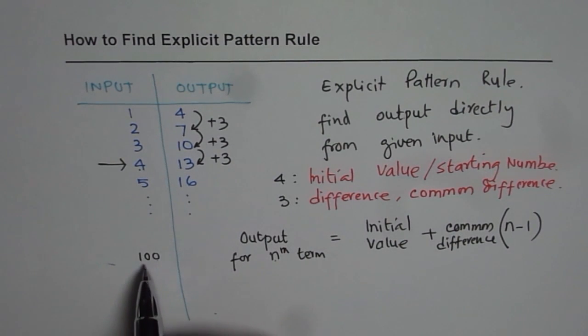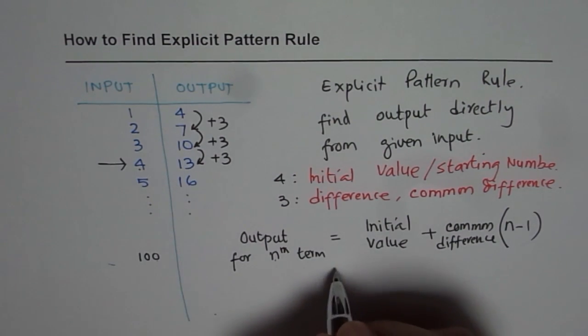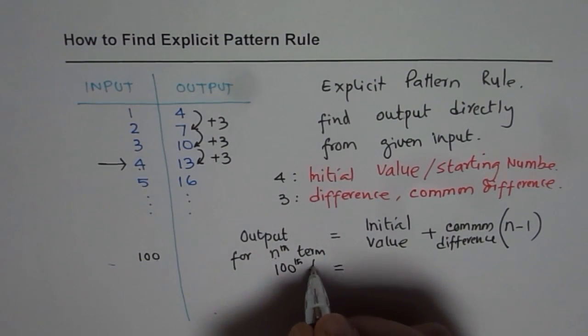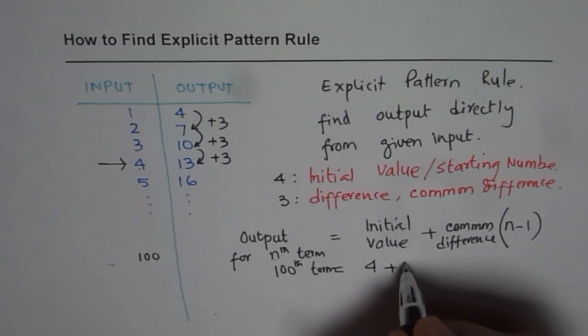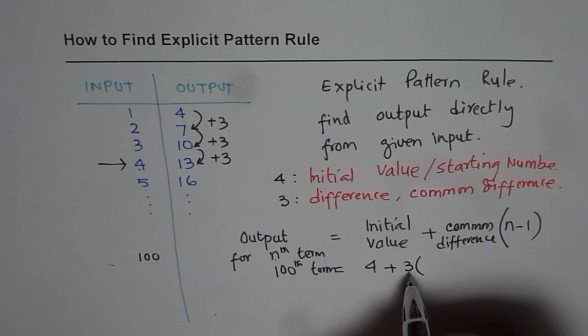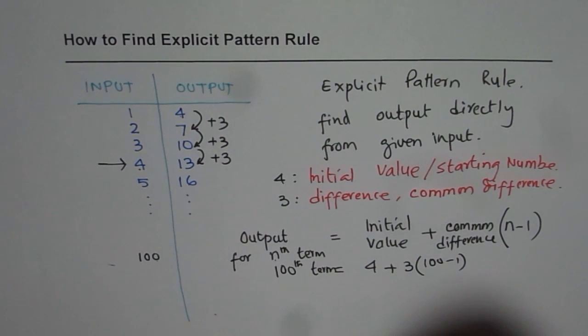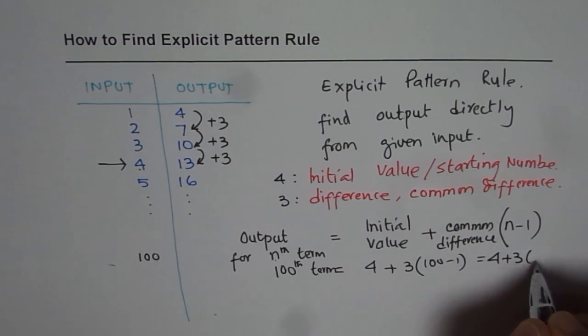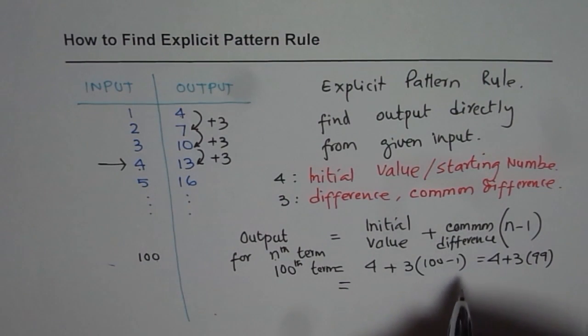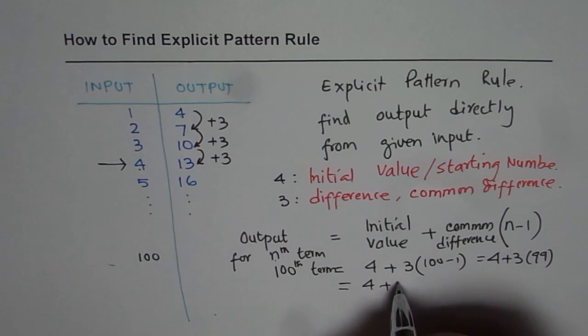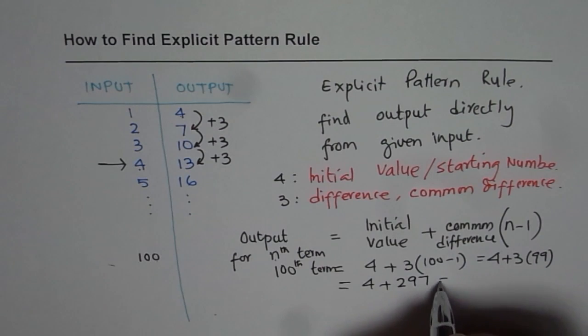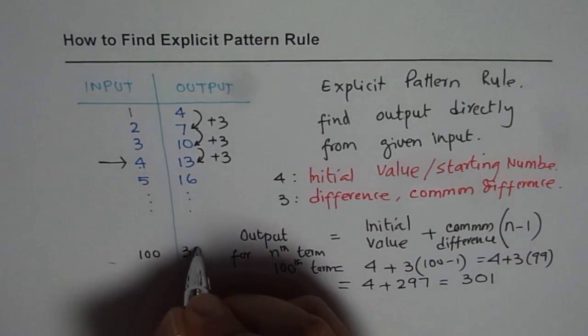So if I want to find the output for 100 as my input, in that case for 100th term my initial value is 4. We started at 4 plus common difference is 3 which needs to be added. How many times? 100 minus 1, 99 times. So we get 4 plus 3 times 99. And that gives us the answer which is 4 plus 3 times 99 is 300. 3 times 100 minus 1, so 300 minus 3, which is 297. And that gives us the answer which is 301. So for the 100th input output should be 301.